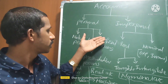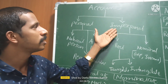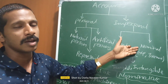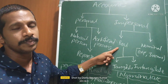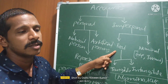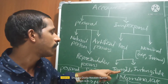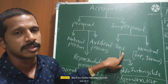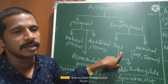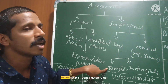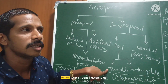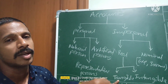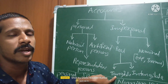Now let's understand impersonal account. Impersonal account is a combination of real account and nominal account. Real account contains the information of tangible and intangible assets — completely asset transactions: buying of asset, selling of asset. In the real account, if any asset comes into the business or goes from the business, we call it a real account. Based on the real account, assets are classified into tangible and intangible.